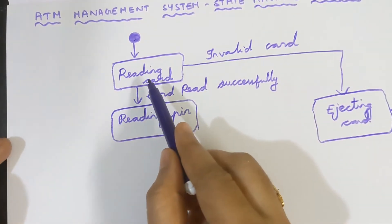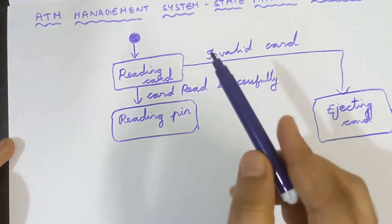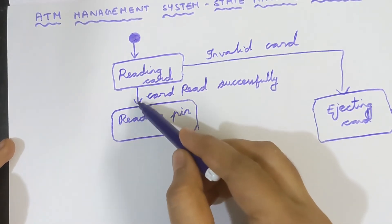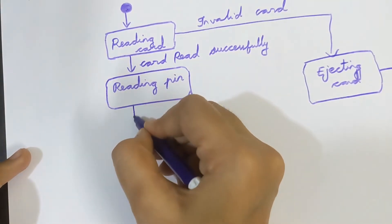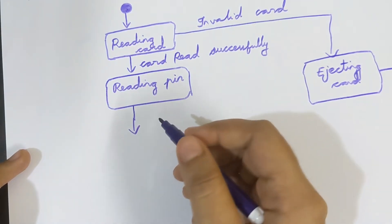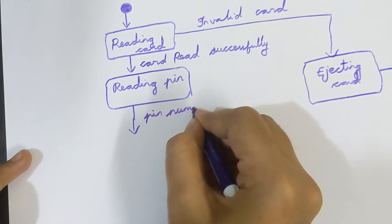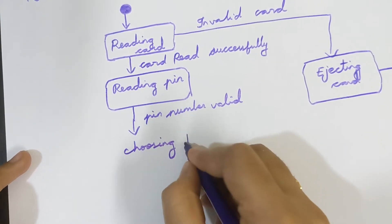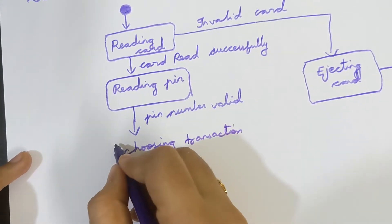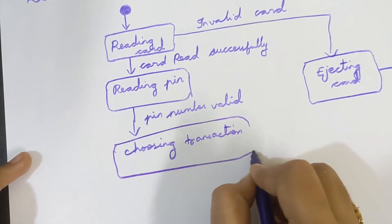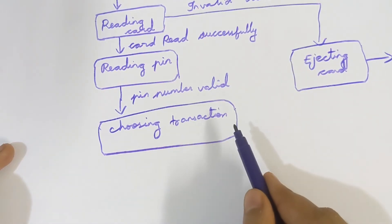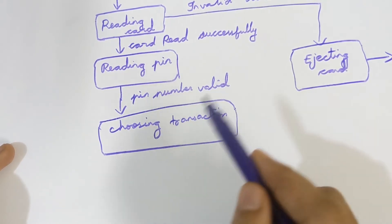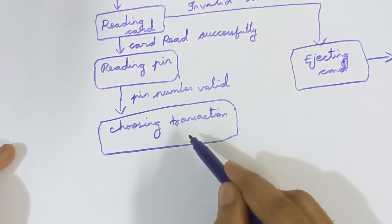If the state moves from Reading Card to Reading Pin, the 'Card Read Successfully' event has occurred. Now it is reading the pin and checking whether the pin entered is correct or not. If the pin number is valid, the state changes from Reading Pin to 'Choosing Transaction' — it will only move to that state when the pin number entered is correct.